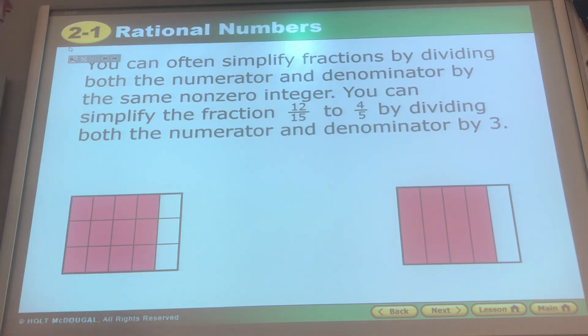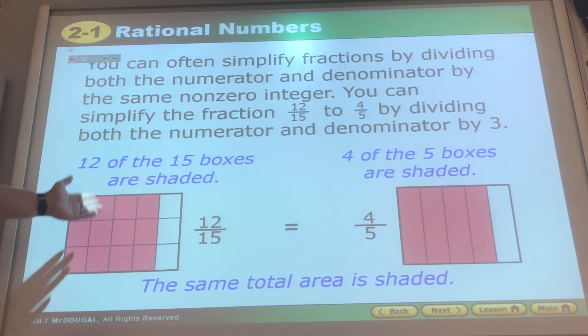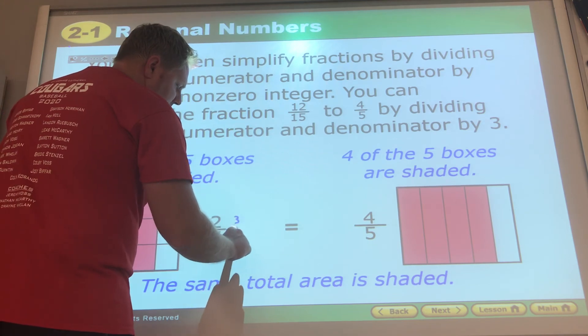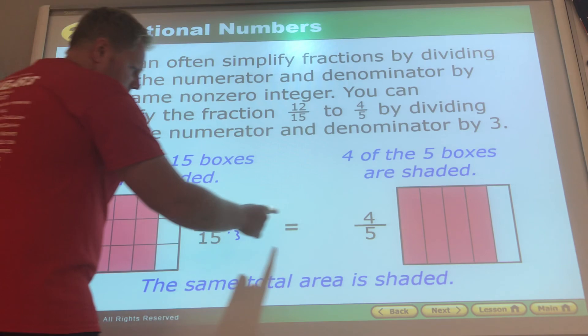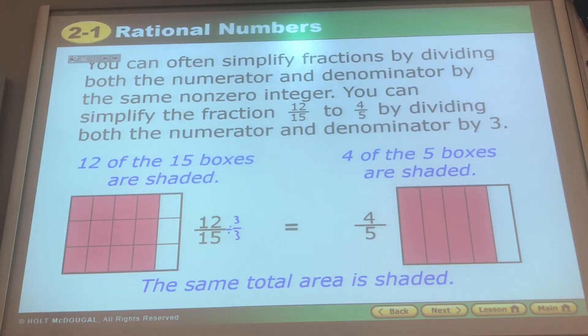If I look at this number 12/15, we're going to see something here in just a second. The space that is covered is the same and here's why: both 12 is divisible by 3 and 15 is divisible by 3. When we do that division we get 4 over 5.